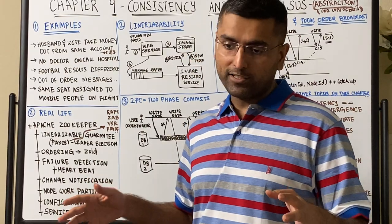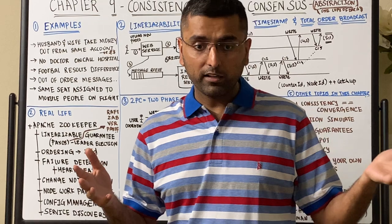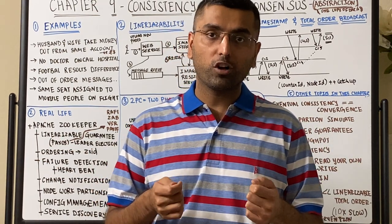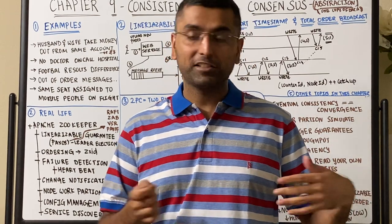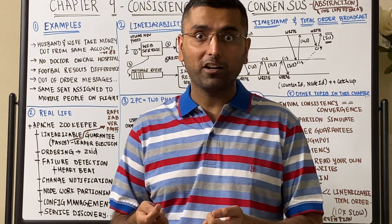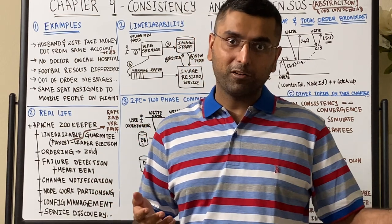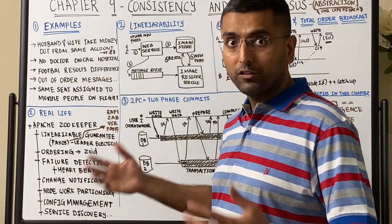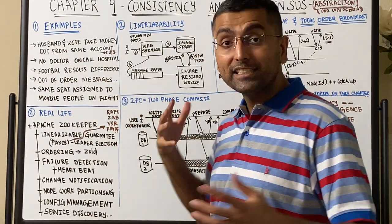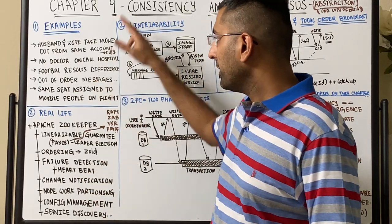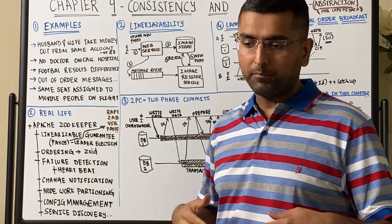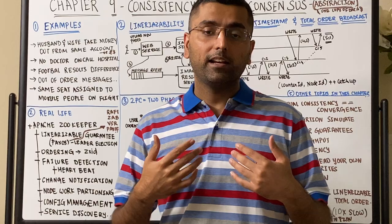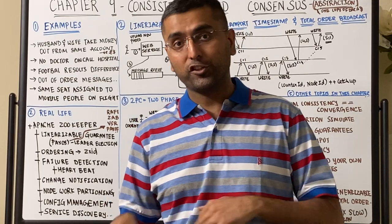Another example: you and your brother are watching a football match in the same room but using two different mobile phones to check the scores. Your brother says this team won, and you're still seeing the match is going on. Someone already has the latest data and you don't. There are ordering issues — it depends on what kind of consensus and consistency exists between these systems. You don't want out-of-order messages arriving, like someone answering a question before the question arrives.